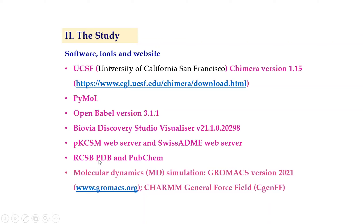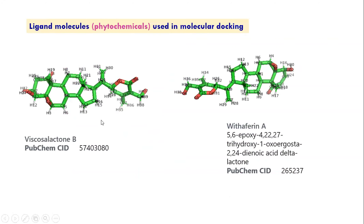RCSB PDB is the web server from which we downloaded the protein structure used as the target in the study. From PubChem, we downloaded three phytochemicals that will be shown later, and one antibiotic—kanamycin—for the study against the protein target. Molecular dynamics simulation was performed using GROMACS version 2021 with the CHARMM General Force Field.